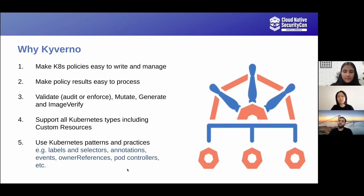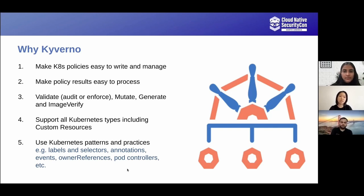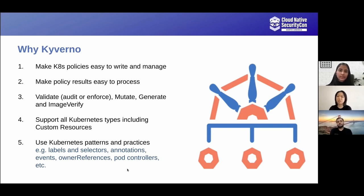Now that we understand why we need policies, let's talk about policy engines. There are options like Kyverno, OPA Gatekeeper, Kubwarden, and others. Kyverno is a Kubernetes-native policy engine with no additional language required — no learning curve. Policies are managed as Kubernetes custom resources, which are easy to write and manage. Kyverno generates policy reports based on policy application results, which is another custom resource available in Kubernetes, making it easy to access, fetch, and process.